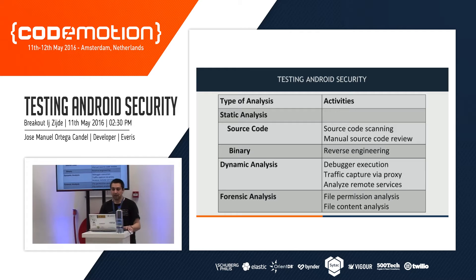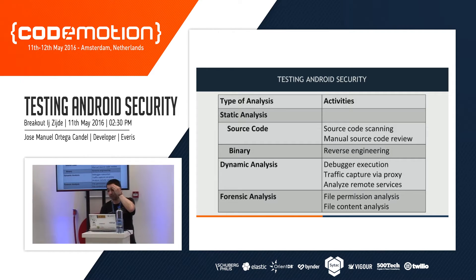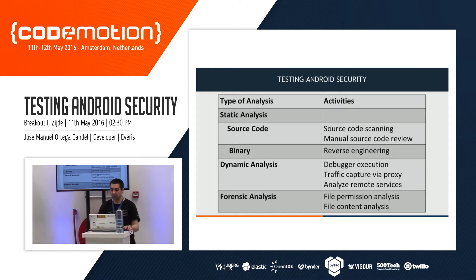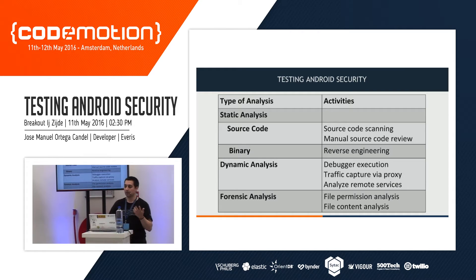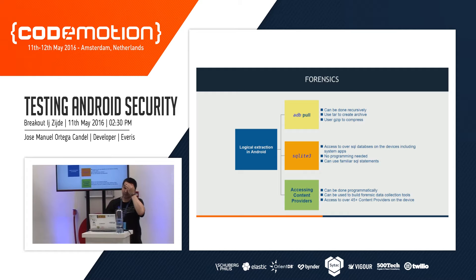In general, we have three kinds of analysis. We have static analysis — that is source code scanning and code review. Dynamic analysis is the execution of the application in a development environment. The main activities in dynamic analysis are, for example, traffic capture via proxy, or analyzing the remote service we are calling in our application. The other type of analysis is forensic — forensics is centered on analyzing file permissions and the file content of our applications. We can use commands like ADB, SQLite, or access to content providers.